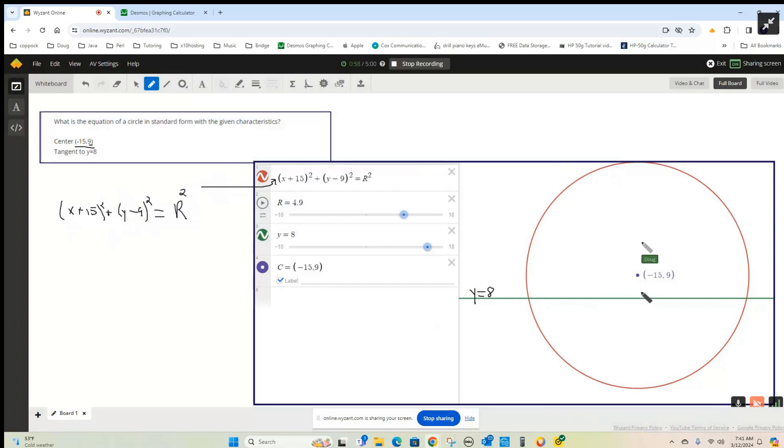And if a line is tangent to a circle, a radius drawn from the center to the point of tangency is perpendicular to the tangent line. Since this line is horizontal, we're looking for a radius that is vertical.